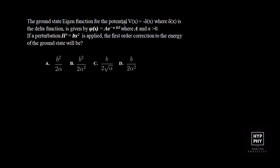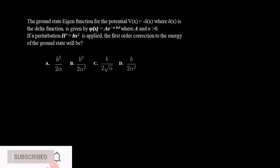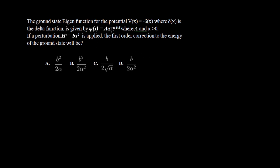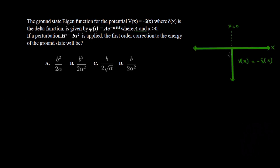The first question: the ground state eigenfunction for a potential V(x) = -δ(x), where δ(x) is the Delta function, is given by ψ(x) = A e^(-α|x|), where A and α are greater than 0. If a perturbation H' = Bx² is applied, the first order correction to the energy of the ground state will be?